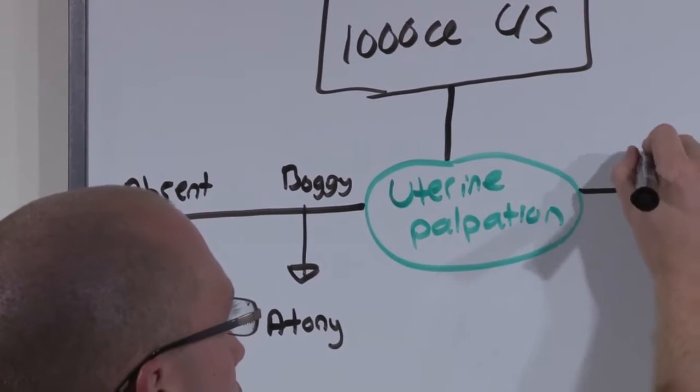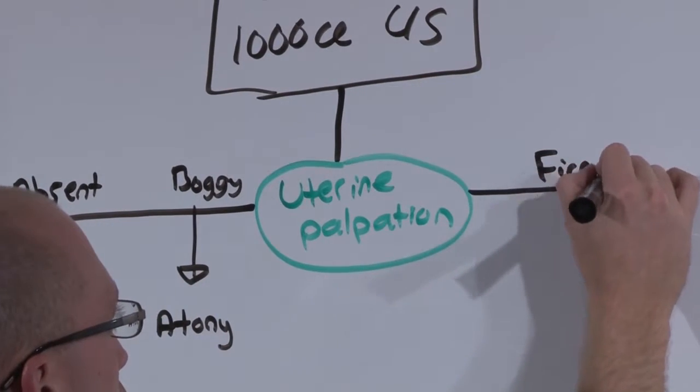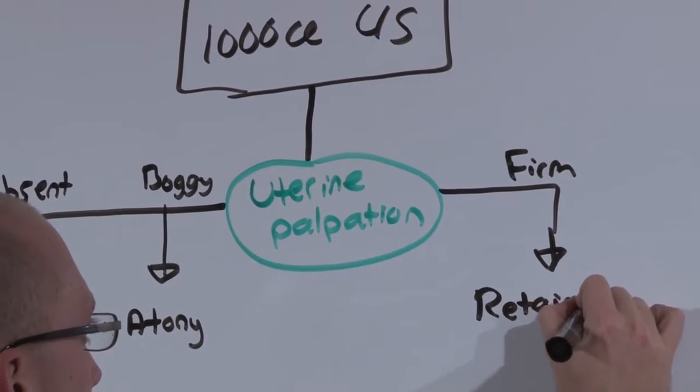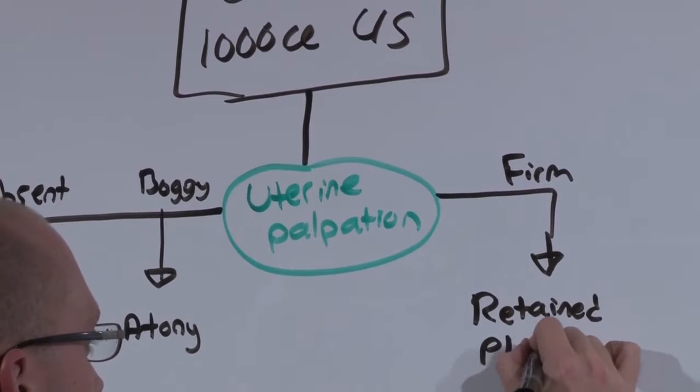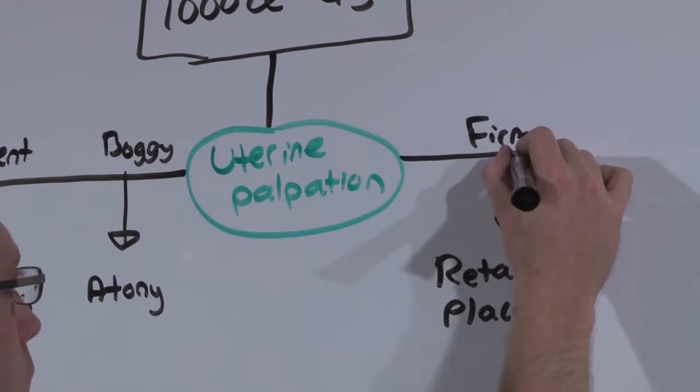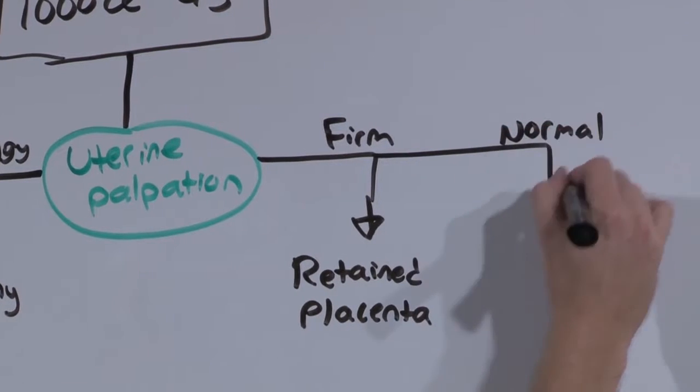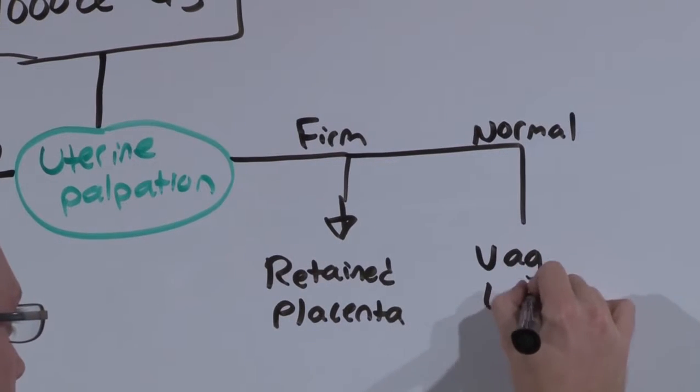If, on the other hand, it is firm and simply won't contract down, it is probably retained placenta. And if it is normal, it is probably not a uterine problem at all, it is probably simply a vaginal laceration.